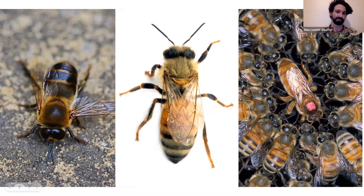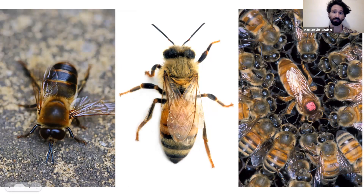On the left-hand side is a drone. Drones tend to be larger and more bulbous than workers or queens, and they have two really large compound eyes that meet at the center at the top of their head. In the center is a worker bee, and to the right is a queen bee. You might notice there's a little bit of paint on the back of her thorax — that's to allow easy identification so that when a beekeeper opens the hive, she's easy to spot.